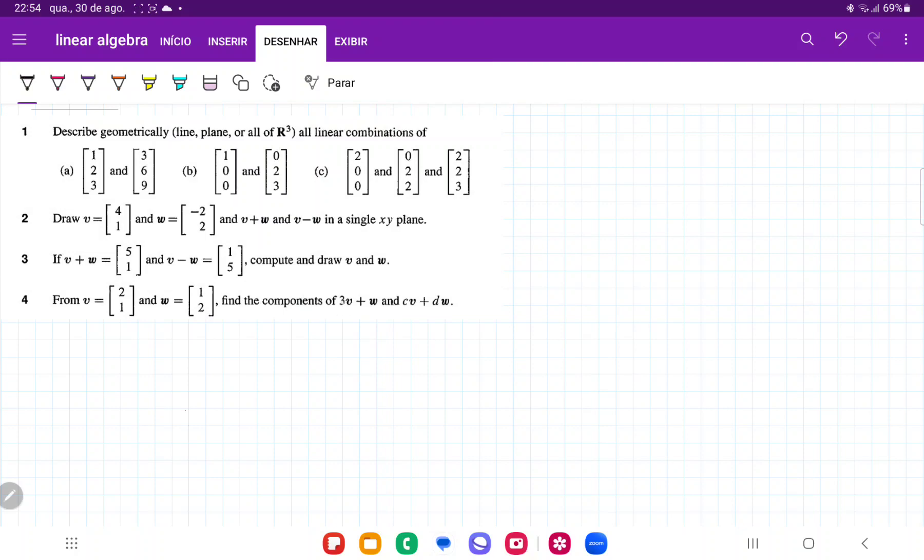So they want us to find the components of 3v plus w. So we're going to have that 3 times v, which is [2, 1], plus w, so plus 1 times w, which is [1, 2].